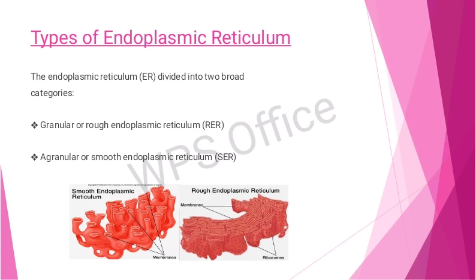The endoplasmic reticulum is divided into two broad categories: first, granular or rough endoplasmic reticulum; and second, agranular or smooth endoplasmic reticulum.